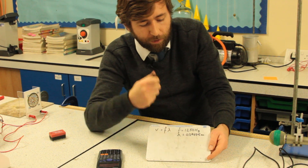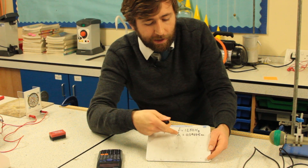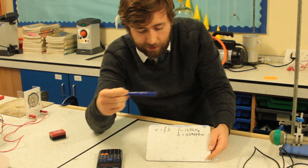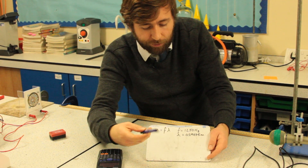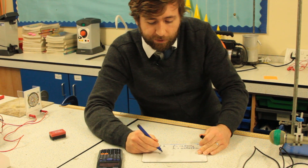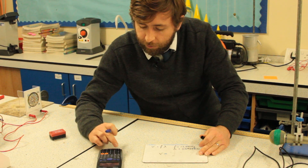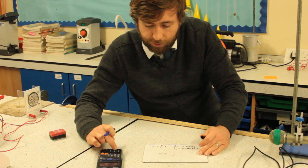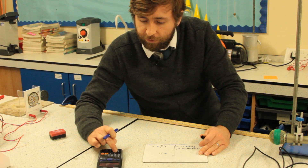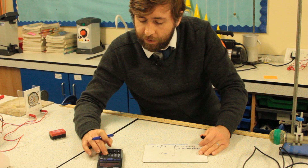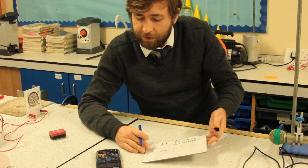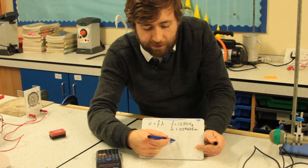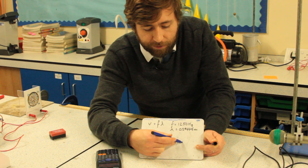So our frequency is 1250 Hz and our wavelength is 0.29475 metres. The wave speed is the product of those, so: 1250 × 0.29475 = 368.4375, giving us 368 metres per second.